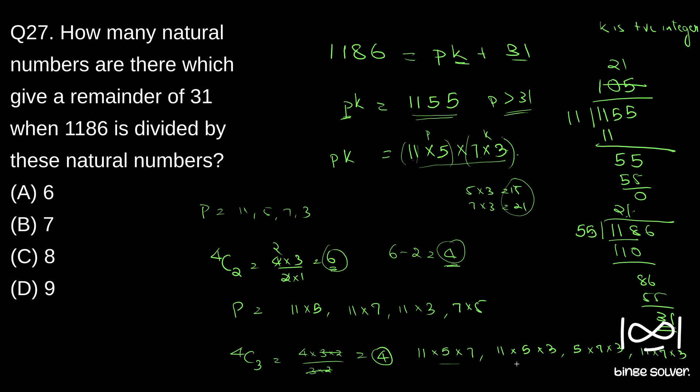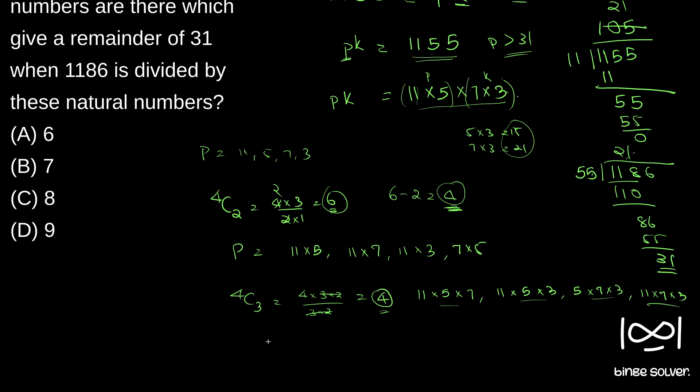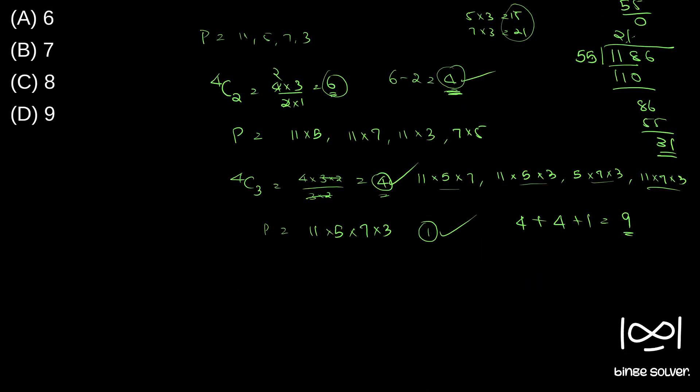And now we have one more case that is picking all the numbers so P could be 11 into 5 into 7 into 3 also. So we have one case here. So total four cases, four cases and one cases, four plus four plus one we have nine cases.